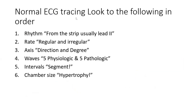When reading an ECG, we assess in this order: rhythm, then rate, then axis, then waves. There are five normal physiological waves and five pathological waves. Then we look at segments such as the PR interval and QT interval, and finally chamber size.